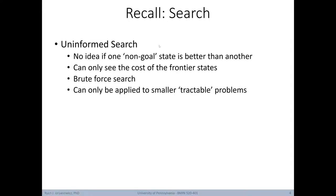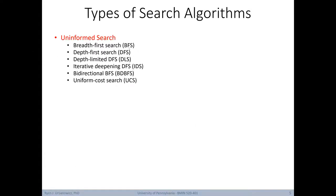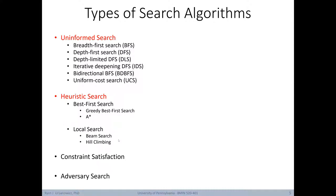Recall from our last lecture that when we're dealing with uninformed search, we have no idea if one non-goal state is better than another. We can only see the cost of the frontier states — those states we can transition to next. Uninformed search is also known as brute force search, and it generally can only be applied to smaller or tractable problems. Heuristic search tends to be applied when we need to better prioritize our search to find a solution more quickly, and requires an evaluation function to estimate how close any given node is to the goal. There are also local search methods, constraint satisfaction search, adversarial search, and population-based search methods we'll cover in future lectures.